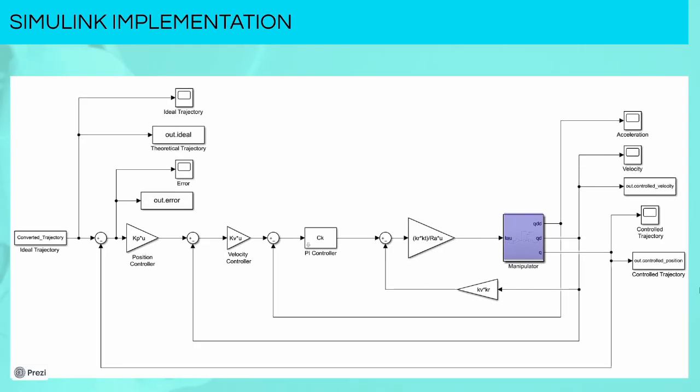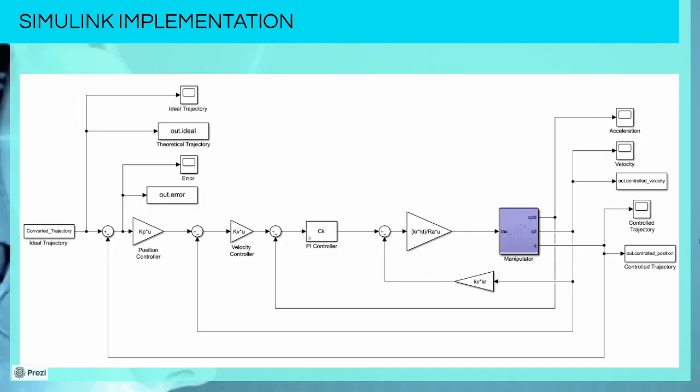On the right, we can see that there is the negative feedback, which represents the back electromotive force. All of this is followed by a gain block, in which we put Kr, the aggregate ratio, Kt, and Ra, the armature resistance matrix.